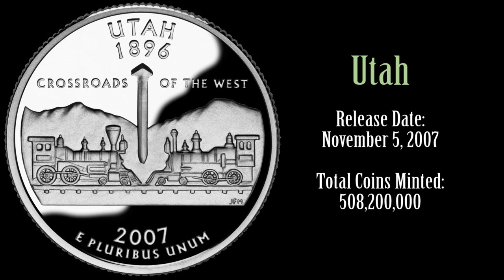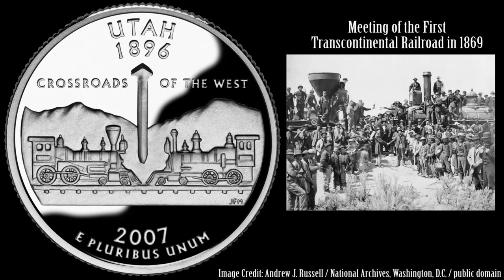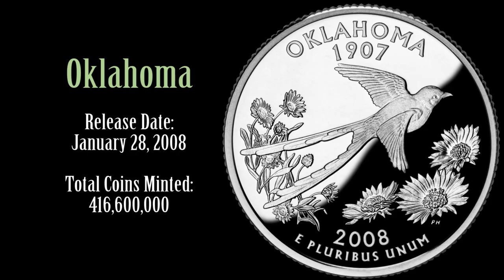Utah's Quarter features the Golden Spike, the final spike driven to join the rails of the first transcontinental railroad across the United States, joining the Atlantic and Pacific Coast in 1869. The railway with locomotives on each side is shown below. Oklahoma's Quarter features a scissor-tailed flycatcher, the state bird, and Indian blankets, a state wildflower.